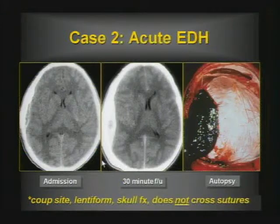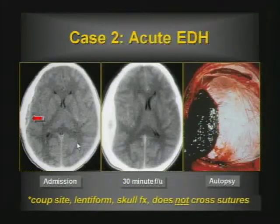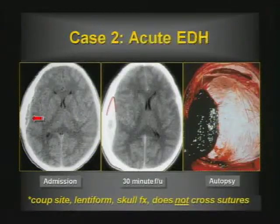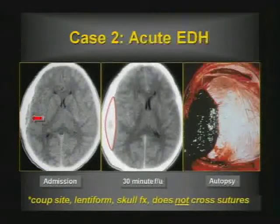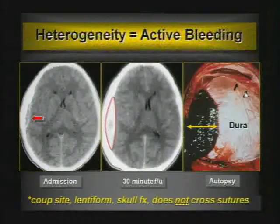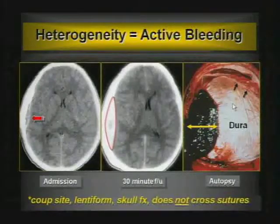Case two makes one particular point. When you see an epidural collection — not subdural — which is at the coup site, tends to be lentiform, the majority are associated with skull fractures, and epidurals do not cross sutures — just the opposite of subdurals. You can see low-density areas in an epidural that can predict active expansion. When you see low-density areas in an epidural hematoma, that's called the swirl sign. You have to get on the phone and call the neurosurgeon because that generally indicates active hemorrhage.